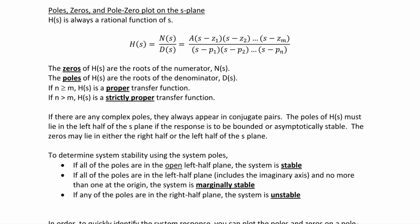Poles, zeros, and the pole-zero plot on the S-plane. H(s) is always a rational function of s: H(s) = N(s)/D(s), written as a·(s−z1)(s−z2)... divided by (s−p1)(s−p2).... The zeros of H(s) are the roots of the numerator; the poles are the roots of the denominator. If the order of the denominator is greater than or equal to the numerator, H(s) is a proper transfer function. If the denominator order is strictly greater, it is a strictly proper transfer function.